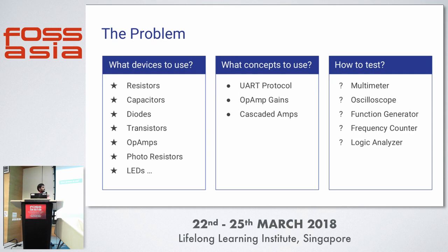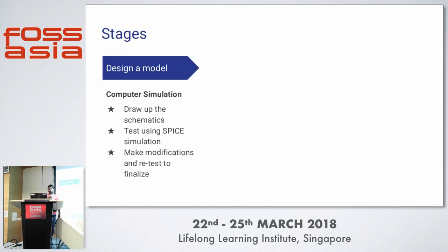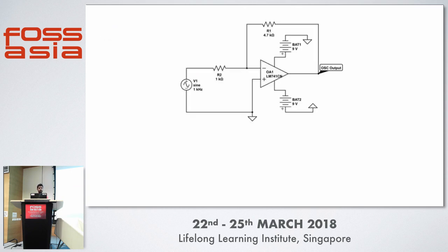We'd also need an oscilloscope to see if the waveforms are correct, a function generator to input a square wave and check if the same waveform appears at the output, a frequency counter to verify that 8 pulses sent equals 8 pulses received, and a logic analyzer to confirm the logic low levels match what the UART module expects. With all that in mind, we first designed a rough sketch on paper.